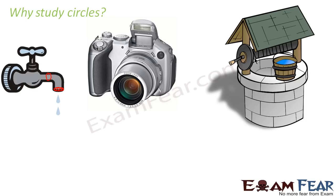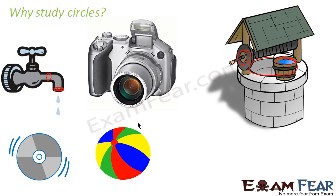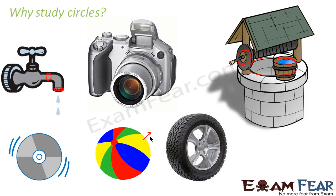Also, if you see the well which we use to get water, the bucket is generally circular, the pulley used is circular, and the well itself is circular in most cases. The compact disc you use to play music, CDs are all circular. The football and baby toys are all circular. The tires of a car are circular, so if you know the perimeter and area of a circle, you can find the speed of the car.